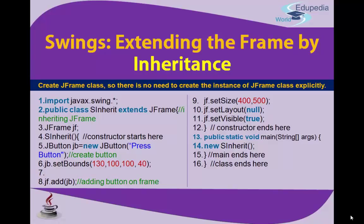The second line is: public class AsInherited extends JFrame. The new keyword here is extends JFrame — extends means it will inherit the properties of JFrame, which is already defined in the Java GUI components library. On the third line, JFrame jf — I have given a reference here. Then the constructor is written with the same name as the class, with parentheses and curly braces. A comment indicates the constructor starts here.